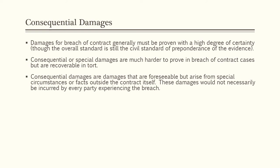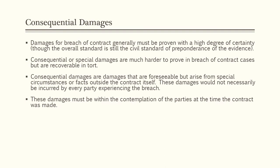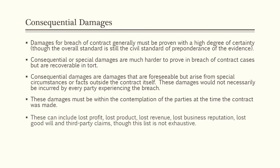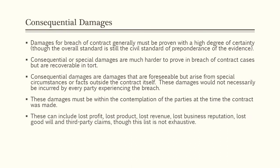There is a classic case called Hadley v. Baxendale from 1854, which dealt with the failure to deliver a crankshaft for a mill on time. Baxendale established that consequential damages are recoverable where a breaching party knows or has reason to know that ordinary direct compensatory damages will not suffice — but the breaching party must know or have reason to know of those damages at the time the contract is made. Consequential damages can include lost profit, lost product, lost revenue, lost business reputation, lost goodwill, and sometimes third-party claims, though this list is not exhaustive.